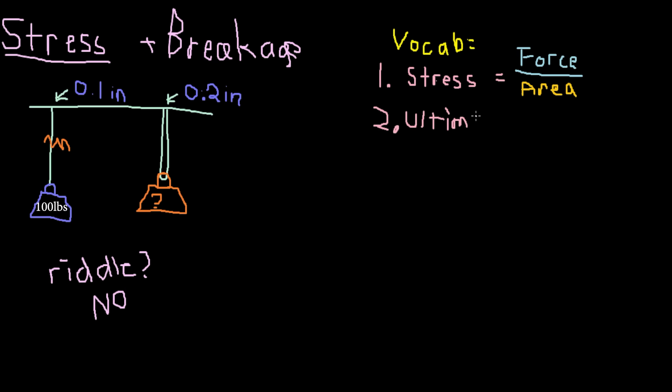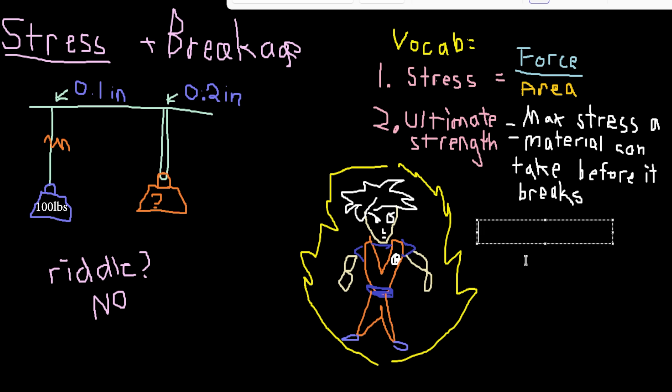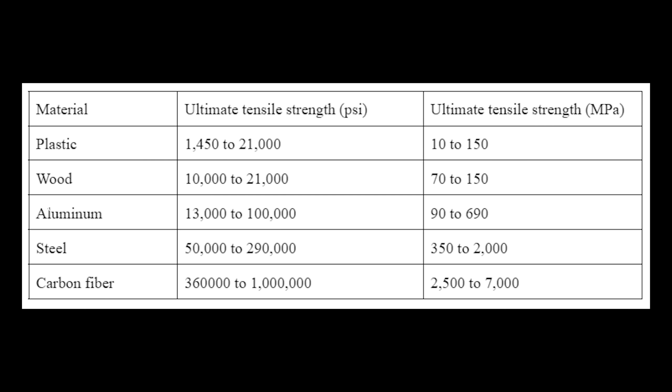Now, the second term we need to learn is called ultimate strength. Yes, I know this sounds like something that an anime character would say in a fight, but in this case, ultimate strength describes the maximum amount of stress a material can take before it breaks. Here is a chart of some common materials along with their ultimate strengths.